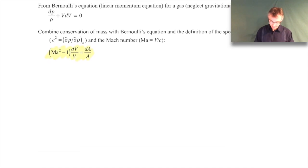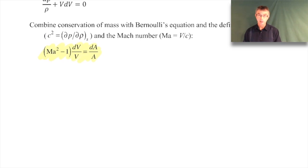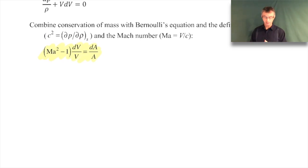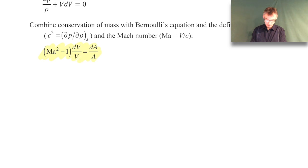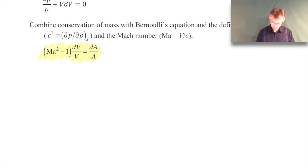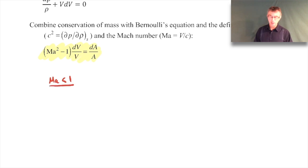That key expression gives us a way to relate the Mach number, the flow velocity, and the area together. Let's consider a few scenarios - some thought experiments. First, let's consider the subsonic case, where Mach number is less than one, and look at two scenarios for the area.